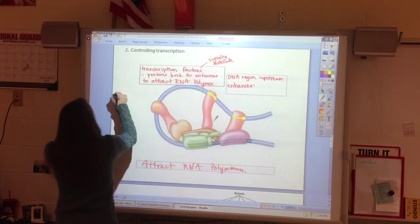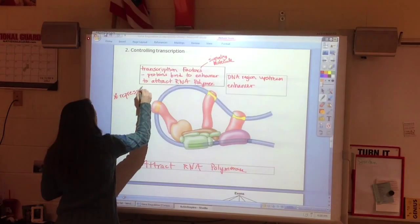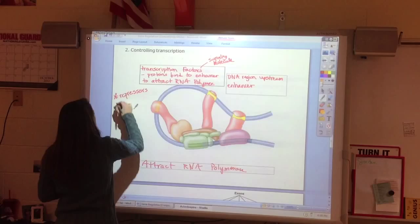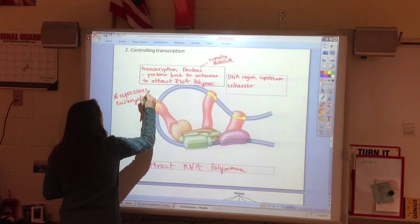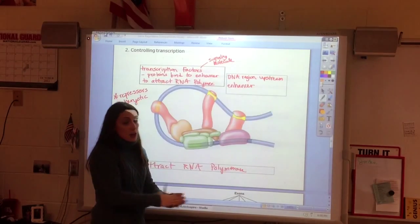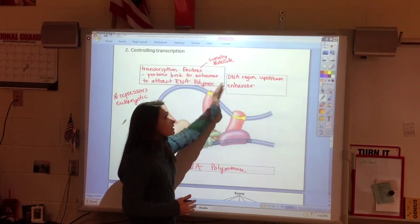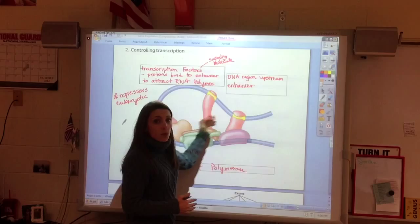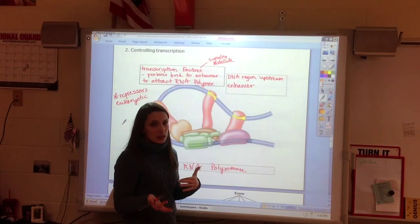We will sometimes see repressors. So just like we talked about repressors in operons, we will see some eukaryotic repressors. But it turns out that the main pattern isn't to repress, but to enhance. So in eukaryotic, we see here that it's more about enhancing regions rather than repressing regions.